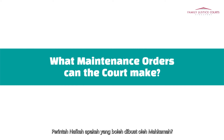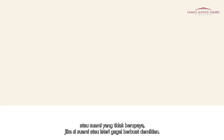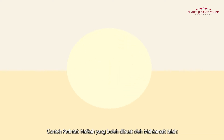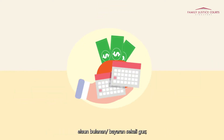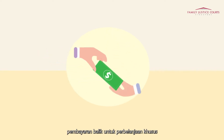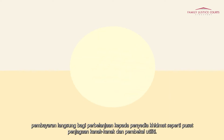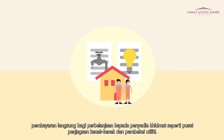What maintenance orders can the court make? The court may order one party to pay maintenance for a wife and/or a child or an incapacitated husband if he or she fails to do so. Examples of maintenance orders the court can make are: a monthly allowance, a lump sum payment, repayment of specific expenses that are being paid by one party, and direct payment of expenses to a service provider like a childcare centre and utilities providers.